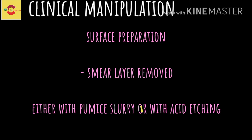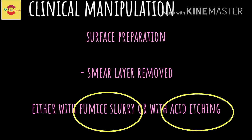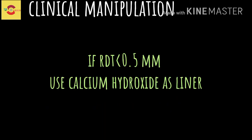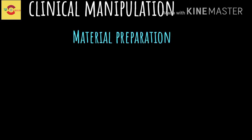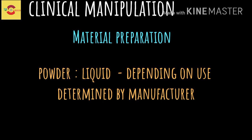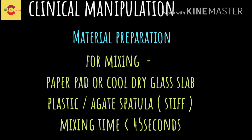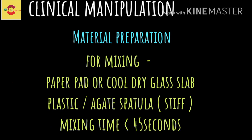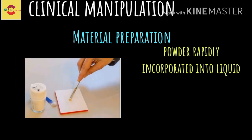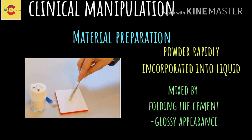The smear layer is removed either using pumice slurry or acid etching. If the remaining dentin thickness is less than 0.5 mm, then a calcium hydroxide liner is indicated. Regarding material preparation, the powder-to-liquid ratio is as the manufacturer mentions. A paper pad or a cool, dry glass slab can be used. A plastic or agate spatula is preferred; metals can be used rarely. The mixing time is usually less than 45 seconds.